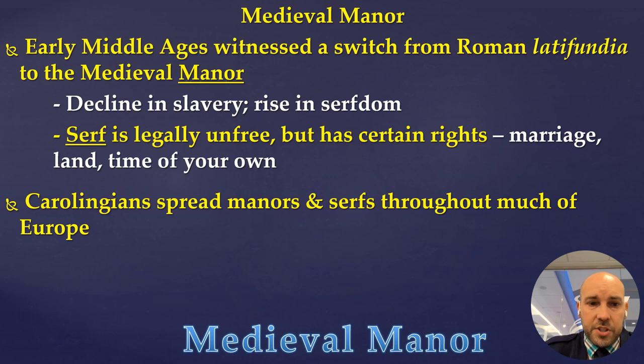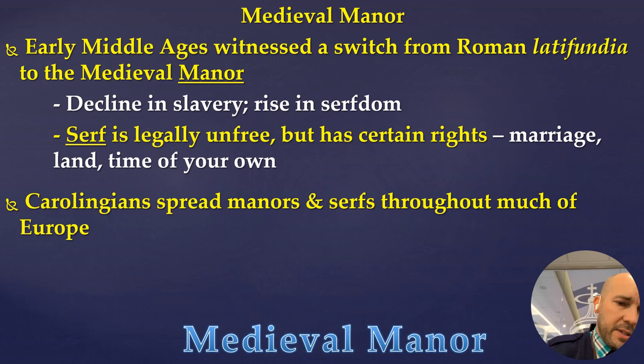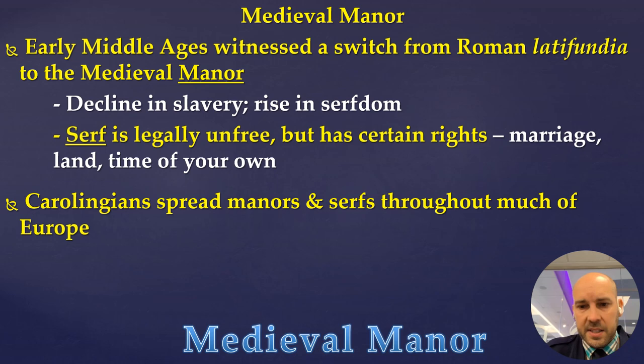Charlemagne's expansions allowed the Carolingian kings to spread this system throughout much of Europe. As Charlemagne expanded into areas that were less Romanized, he spread the use of manors and serfs throughout Europe. As more people adopted it, the system moved even farther — to the English Isles, Scandinavia, and farther east into Russia.